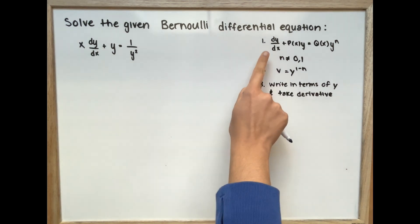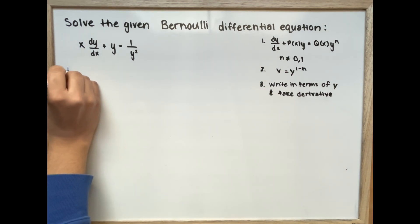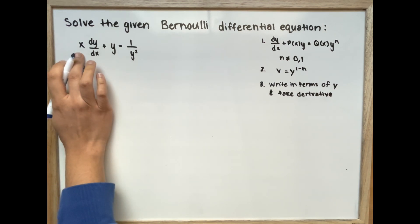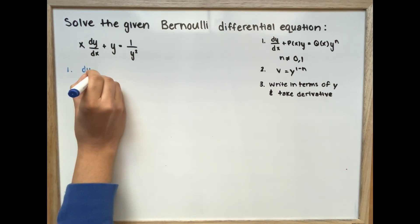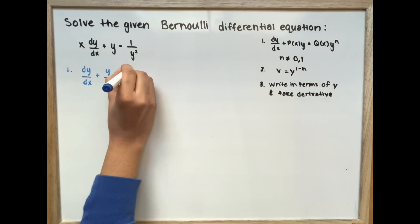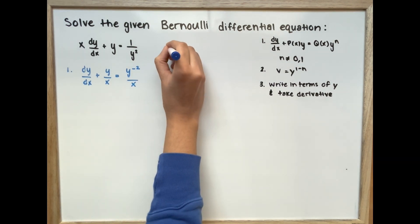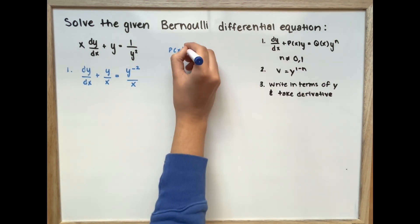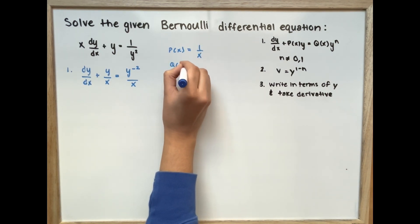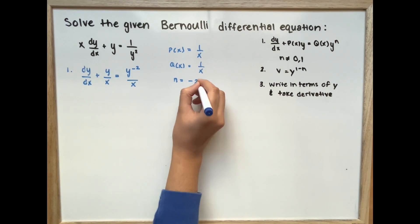First, we're going to put our equation into standard form. So dy over dx plus y over x is equal to y to the power of negative 2 divided by x. Now we can set P(x) equal to 1 over x, Q(x) equal to 1 over x, and n equal to negative 2.